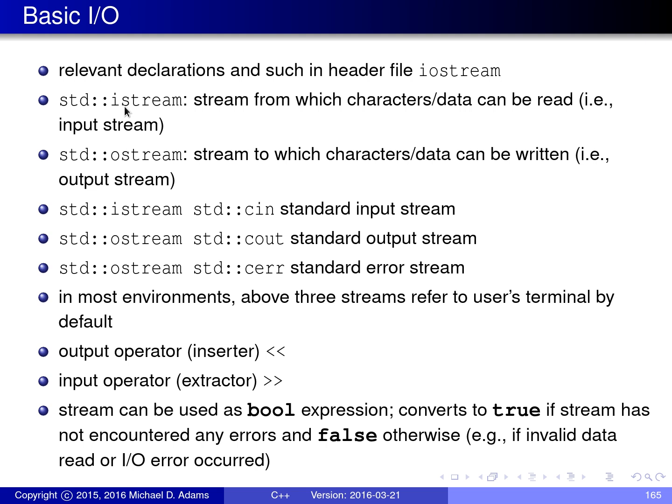There's a user-defined type called istream, which stands for input stream. This is a stream from which characters or data can be read. There's another user-defined type called ostream, which stands for output stream. It's a stream to which characters or data can be written.